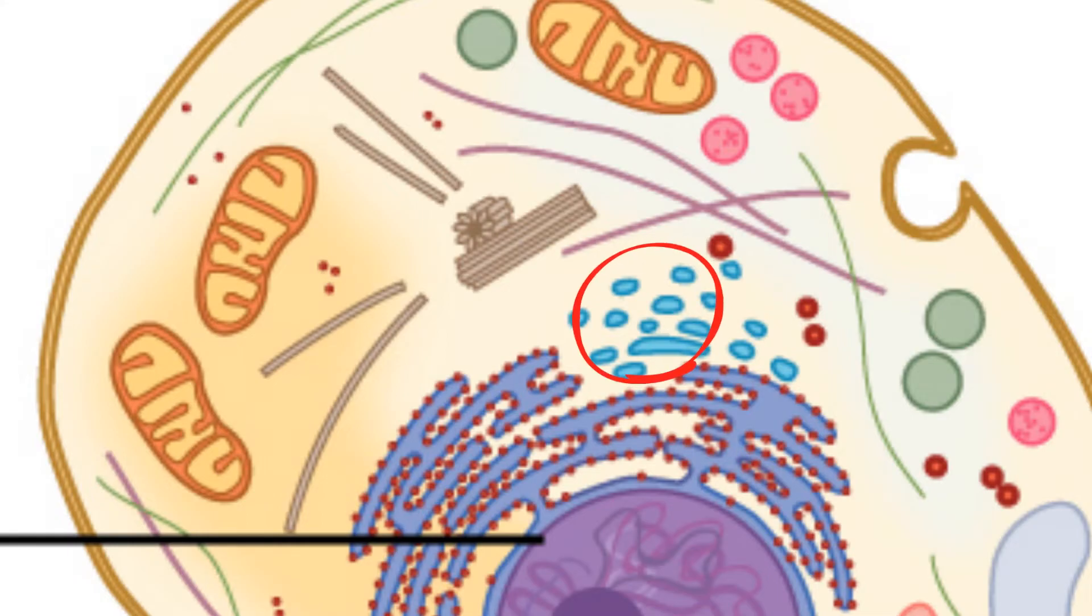Smooth ER looks smooth because it does not contain ribosomes. It has a different job than the rough ER.